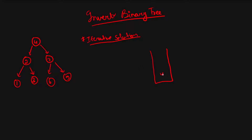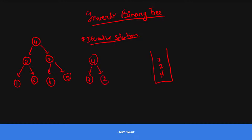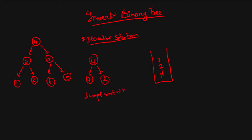We pop the top element — for example, node four. We push its left child (two) and right child (seven) onto the stack. After pushing them, we swap the left and right children. We do the swap by calling a swap function on root.right and root.left, which swaps those references.